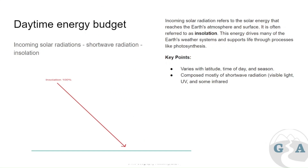Looking at the daytime energy budget: we get our energy from the sun, which we call incoming solar radiation or shortwave radiation, also known as insolation. We imagine 100% of that coming down into the earth. This is giving us the energy during the day, and obviously it's not there during the night — that's the big difference. It does change with latitudes, time of day, and potentially the season depending on where you are in the world.